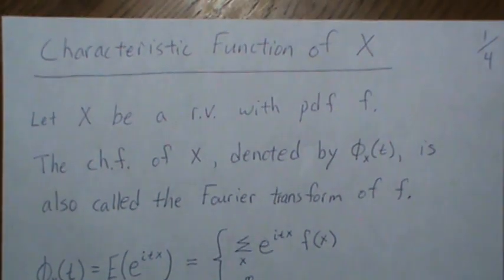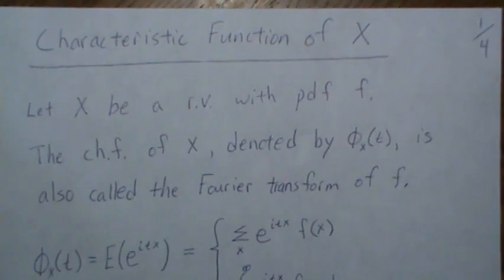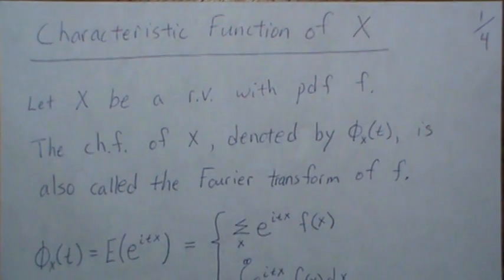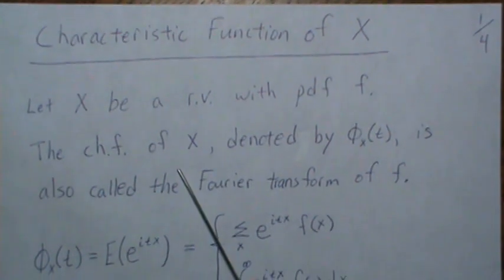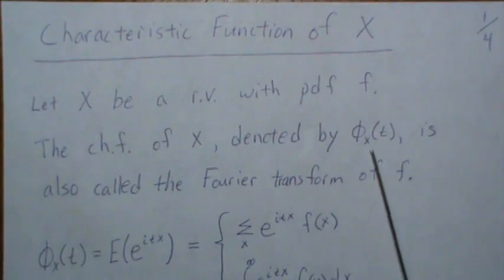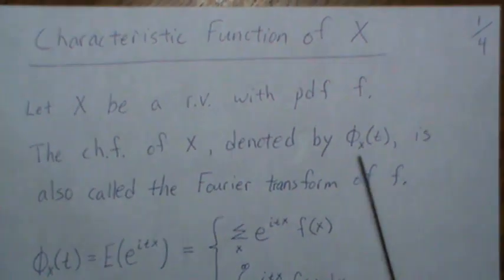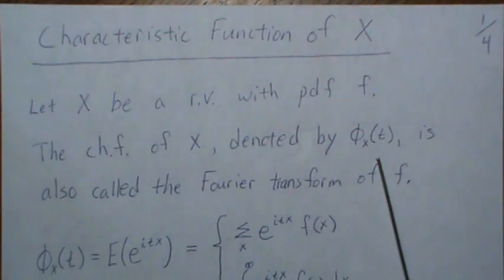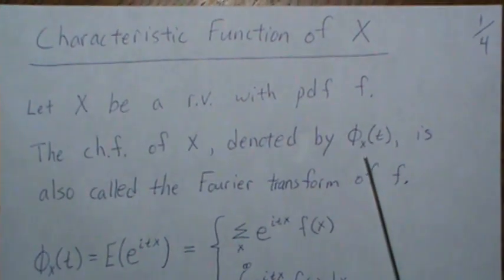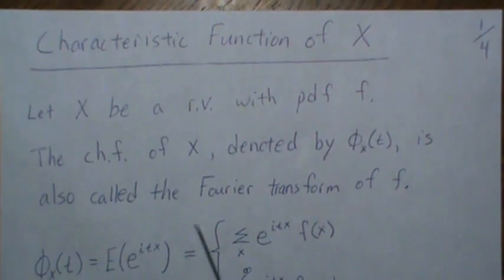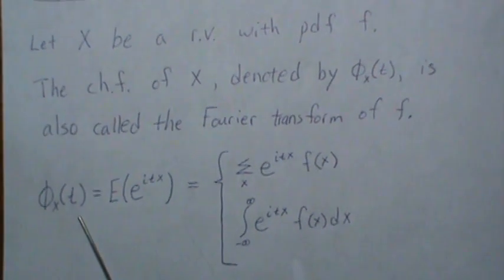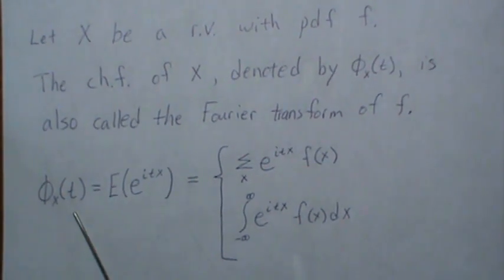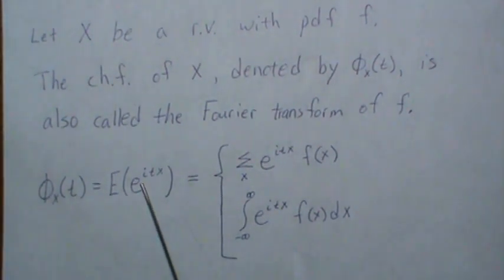The second video looked at the derivatives of a characteristic function being finite. Here we're going to let X be a random variable with PDF f. The characteristic function, denoted φ_X(t) — sometimes the X is left off if it's understood — is also called the Fourier transform of f. It's defined as φ(t) = E[e^{itX}].